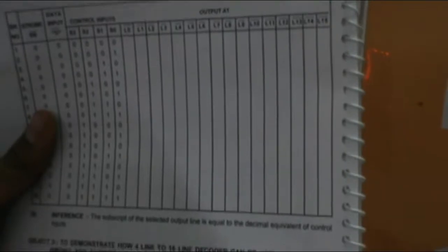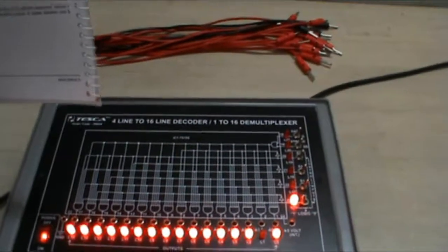As you can see in this table, this table is for the observation of the second experiment. Give different inputs and get the output. If I give 1, this is my output of the LEDs.